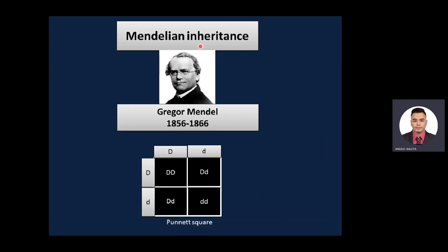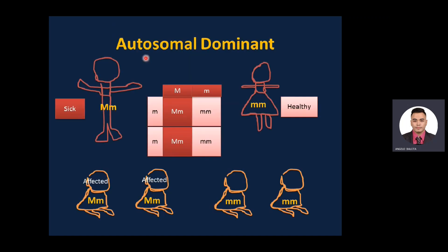Let's start a new section on Mendelian inheritance. This was derived by Gregor Mendel, a monk from Austria who planted peas in the back of a church between 1856 and 1866. He used Punnett squares and recognized that organisms have genes, and genes have alleles. If alleles are similar, it is homozygous; if different, it is heterozygous.